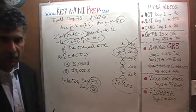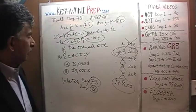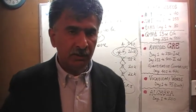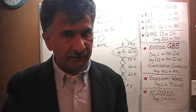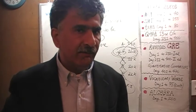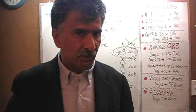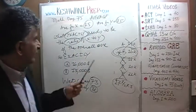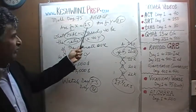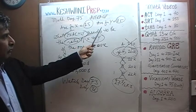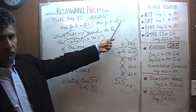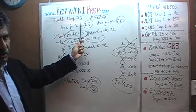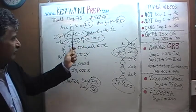Here is how the problem went. We were told that in a firm — in a company — we have department X and department Y. Every employee in the firm either belongs to department X or department Y. The average salary in department X was $15,000, and the average salary for department Y was $25,000. It's very important that you have watched day number 74 because that's where this is coming from.